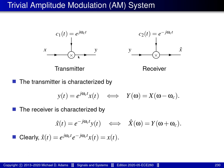The transmitter is characterized in the time domain by an equation where its output y equals its input x times a complex sinusoid with frequency ω_c. The receiver is characterized by an equation where its output x-hat equals its input y times a complex sinusoid with frequency −ω_c.